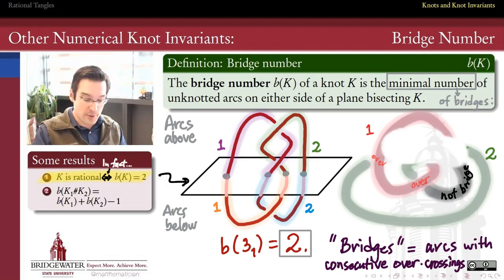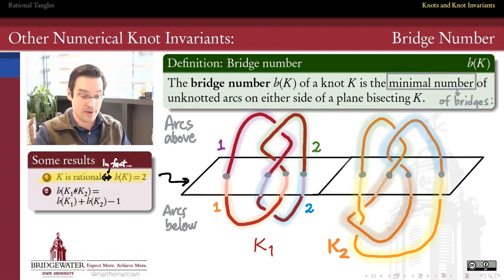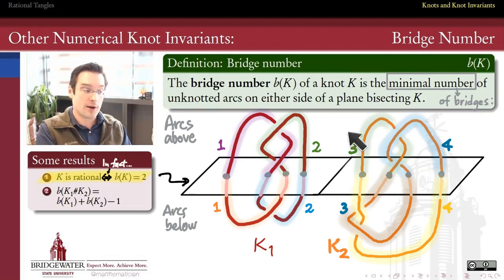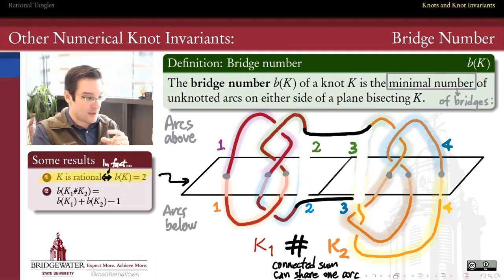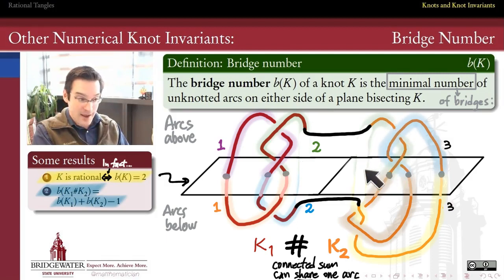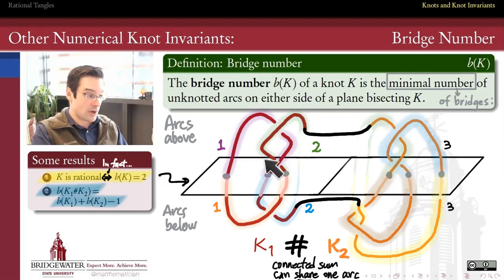We also have a result about bridge number under connected sum. Here are two two-bridge knots, k1 and k2 — the one on the right is actually a diagram of the figure eight knot, 4-1. When I take their connected sum, I remove a little piece of arc between them and connect them up. That operation connects one arc from the left knot with one arc from the right knot, turning those two into a single arc above and a single arc below. So the bridge number of the connected sum is not just the sum of the bridge numbers, but the sum minus one, because the two knots share one arc when connected.